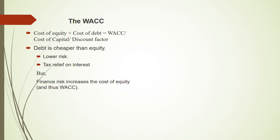Debt also has lower risk than equity, and there is tax relief on interest — these are the advantages of debt. But there is a disadvantage: financial risk will increase. Financial risk increases the cost of equity and also WACC. If you keep taking on more debt, a point will come where the financial risk disadvantage exceeds the benefit of debt, so the cost of equity will start increasing, and because of that WACC will also increase.